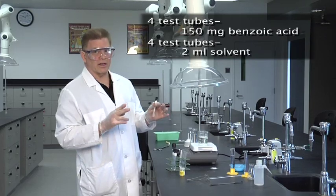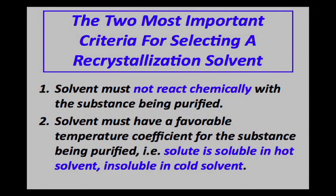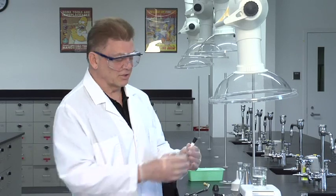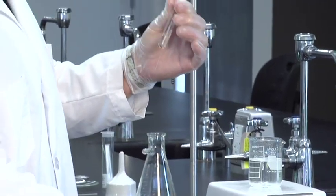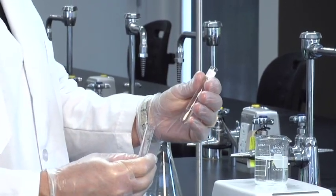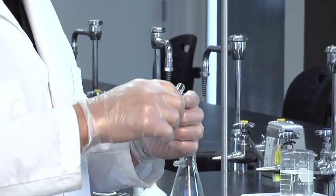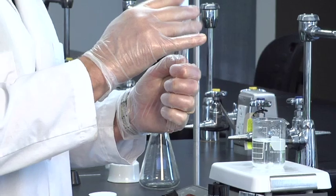The two main criteria for a recrystallization solvent are: the solvent cannot react with the compound, and the benzoic acid needs to be soluble hot and insoluble cold. So if we put the benzoic acid in at room temperature and it dissolves, this will not be an appropriate recrystallization solvent. The first one I've selected is methanol — we'll often use methanol as a recrystallization solvent in some of our other experiments. I'm going to dump the 150 milligrams into the test tube with the methanol.